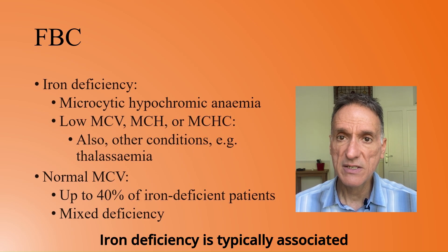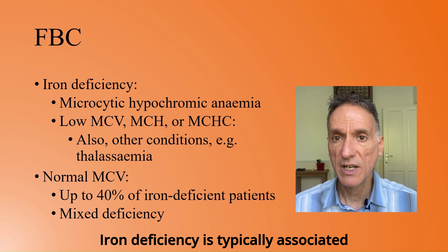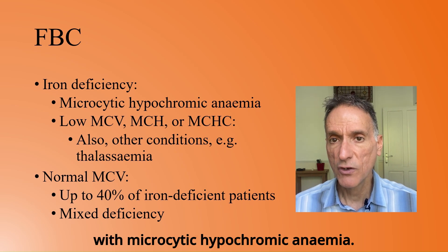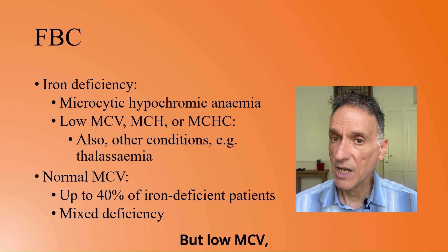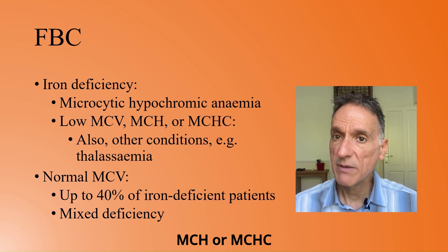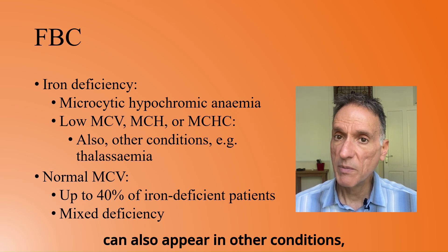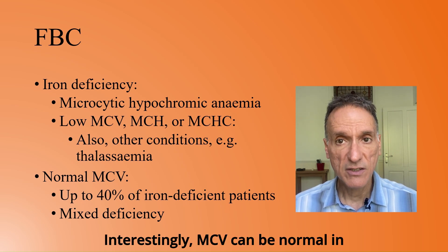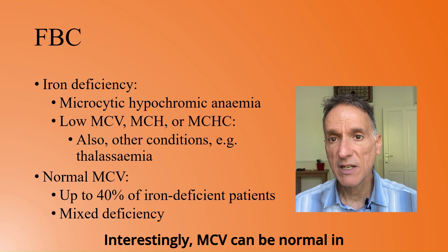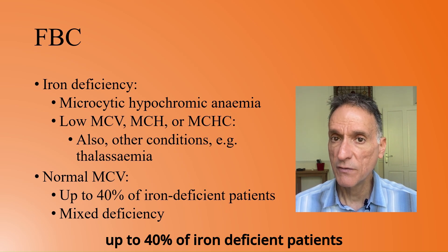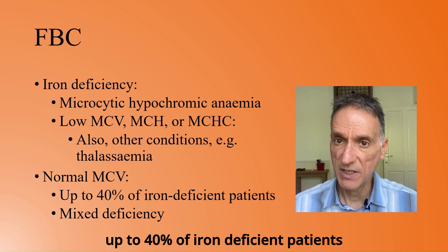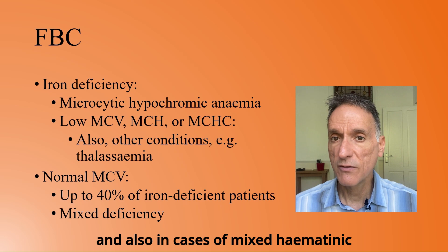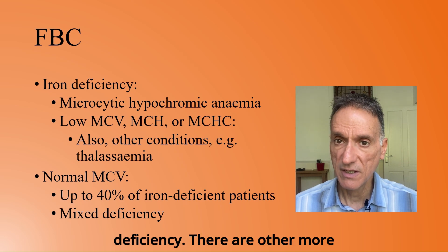Iron deficiency is typically associated with microcytic hypochromic anaemia. But low MCV, MCH or MCHC can also appear in other conditions, especially the thalassaemias. Interestingly, MCV can be normal in up to 40% of iron deficient patients and also in cases of mixed haematinic deficiency.